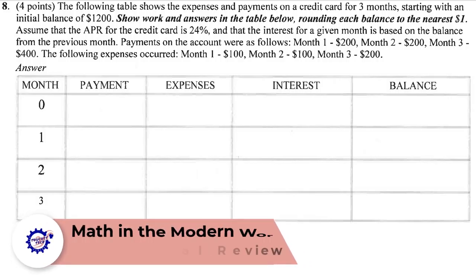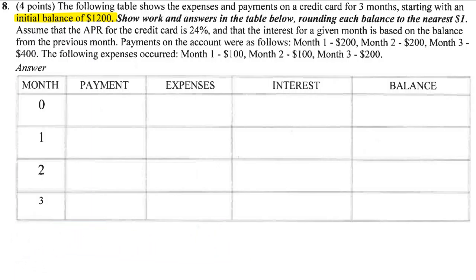Let's consider problem number eight. We've got this table showing credit card balances for three months, starting with an initial balance of $1,200. We're going to show our work and round each balance to the nearest dollar.